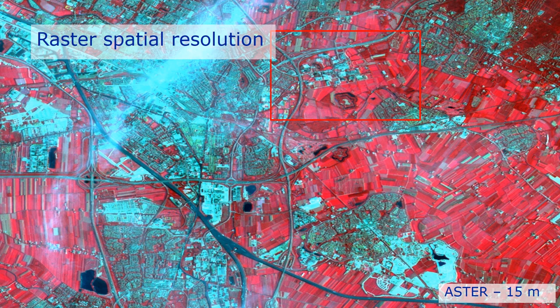We see the contrast between the city of Utrecht, shown in white and light blue, and the countryside, where we see the typical Dutch grazing lands in red.